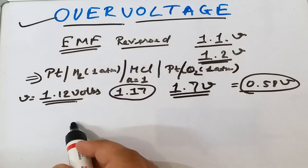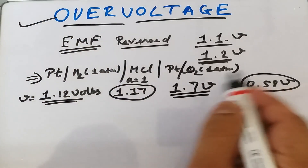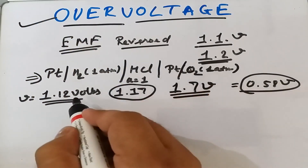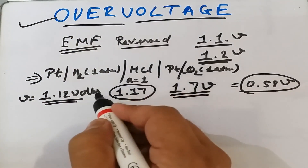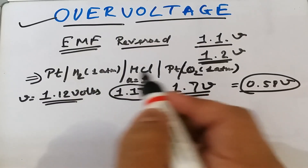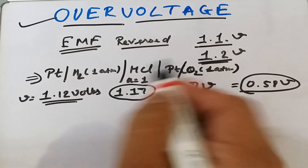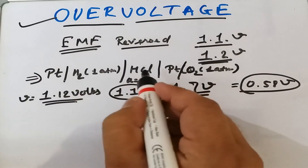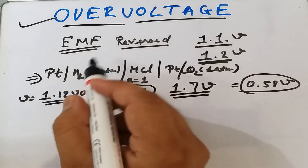This excess of voltage required to reverse any particular cell reaction is known as overvoltage. Overvoltage may be defined as the excess of voltage over the voltage of the cell that is necessary to reverse any reaction.